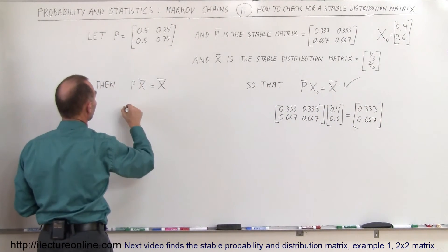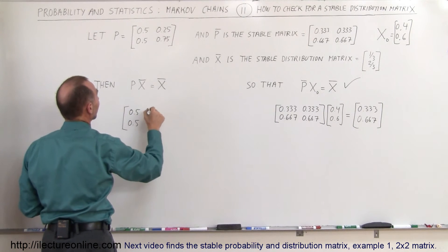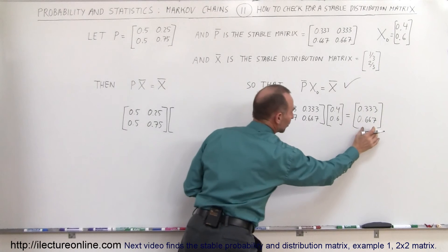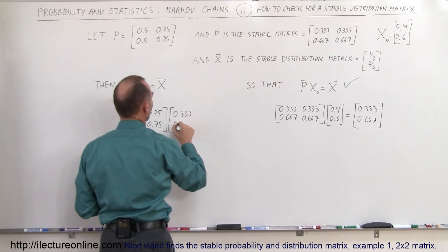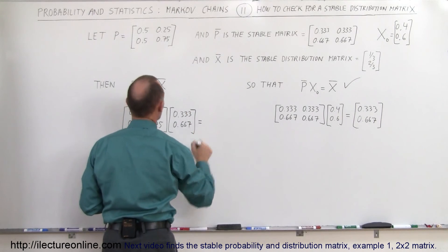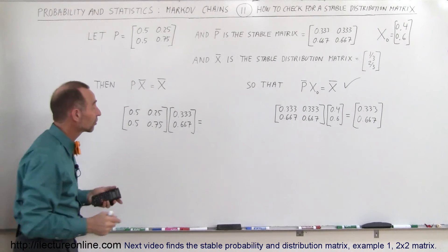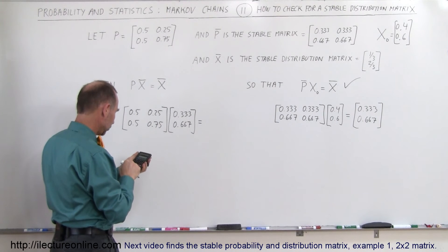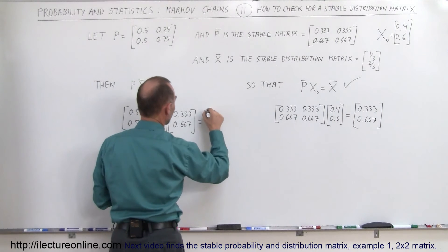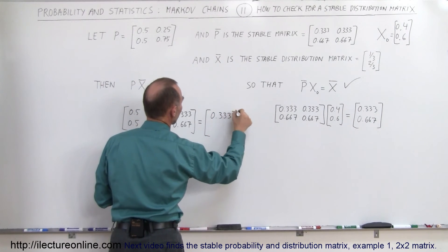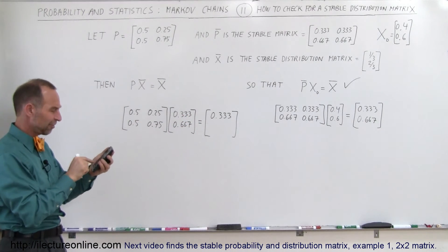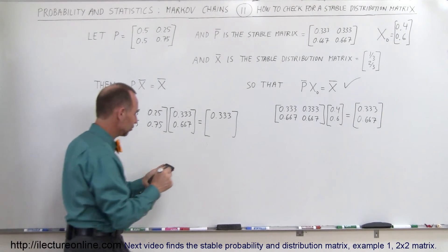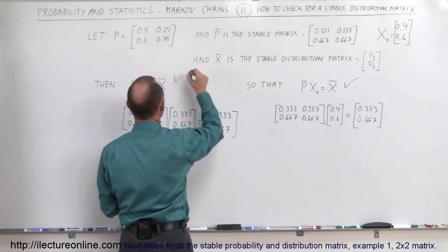Now we take the probability matrix — 0.5, 0.5, 0.5, 0.25, 0.75 — and multiply that times the stable distribution matrix, which is 0.333 and 0.667. We should get the same stable distribution matrix back. So: 0.5 times 0.333 plus 0.25 times 0.667 equals — sure enough — 0.333. Then: 0.5 times 0.333 plus 0.75 times 0.667 equals — sure enough — 0.667. This checks out as well.